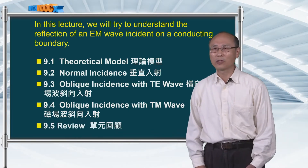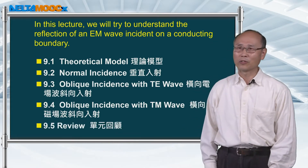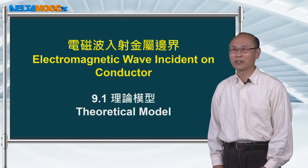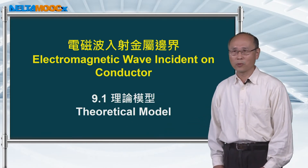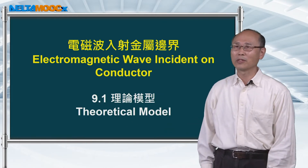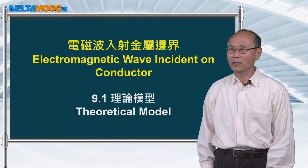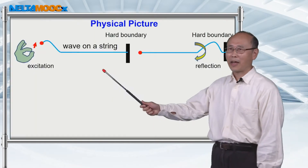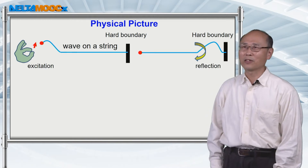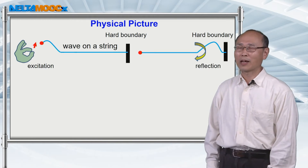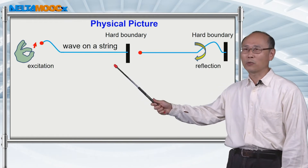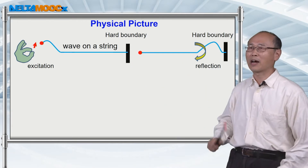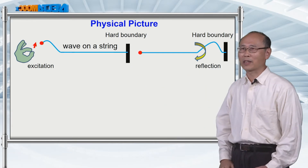Finally, I'm going to give you a few reviews. This is session 9.1, where I'm going to show you the theoretical model to solve the problem. On this page, this is the physical picture of a string wave propagating toward a boundary and then being reflected at the boundary, which is the physical picture I showed you when I first introduced waves.